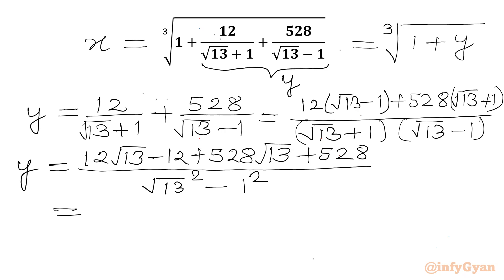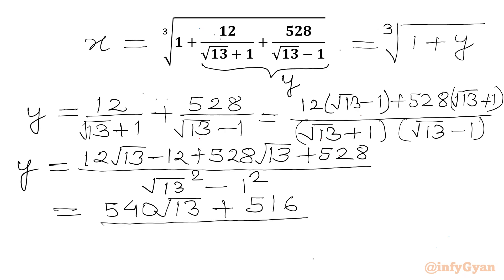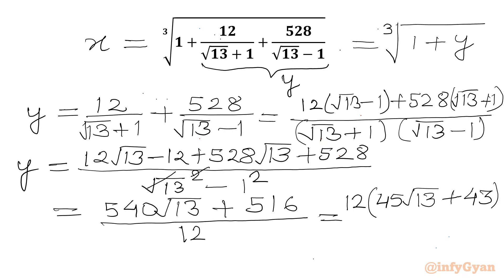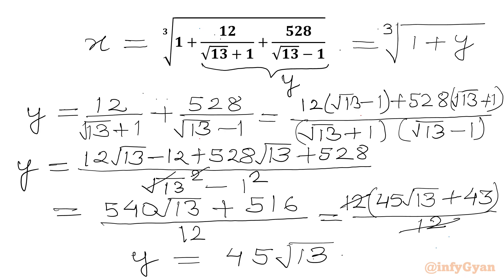So 528 plus 12 is 540 for the square root 13 coefficient, and 528 minus 12 is 516 for the constant. The denominator becomes 13 minus 1 which is 12. Now I can take 12 common from the numerator, giving 45 square root 13 plus 43, and the denominator is 12. So this cancels out, and we get y equal to 45 square root 13 plus 43.